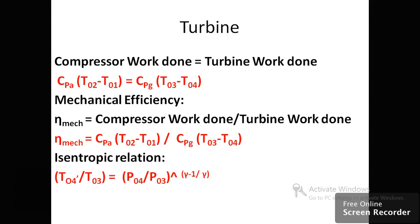If mechanical efficiency is given, it is the ratio of compressor work to turbine work: η_m = Cpa·(T₀₂ − T₀₁) / (Cpg·(T₀₃ − T₀₄)). The isentropic relation for the turbine gives: T₀₄′/T₀₃ = (P₀₄/P₀₃)^((γ−1)/γ).